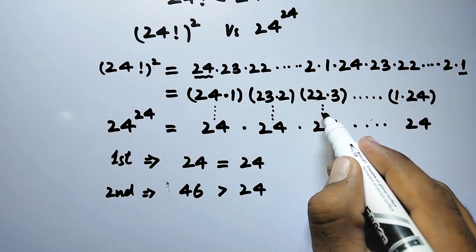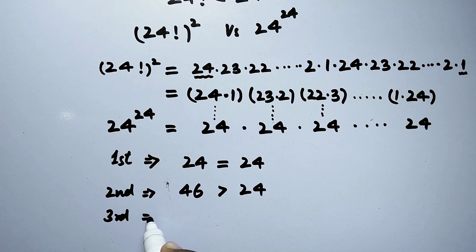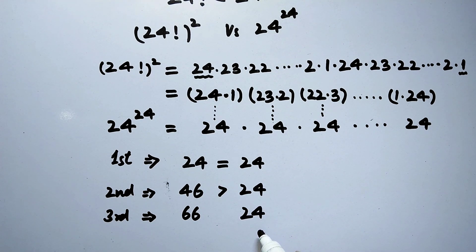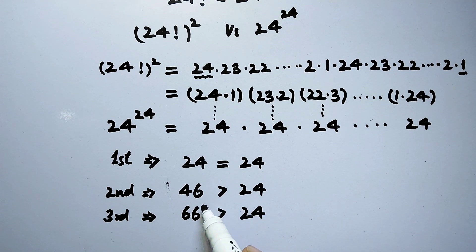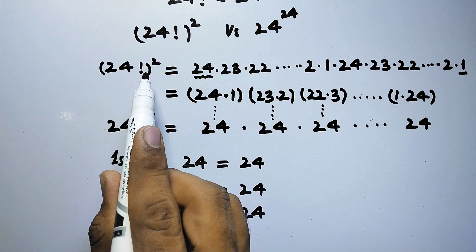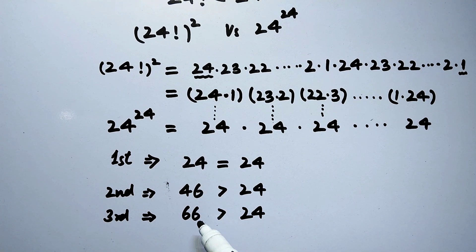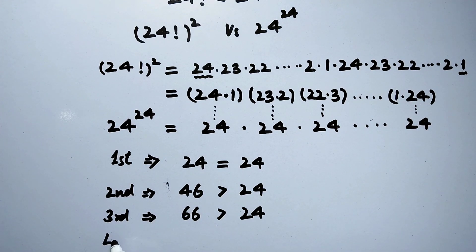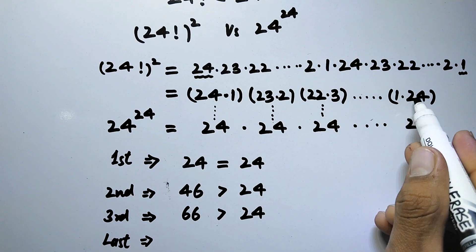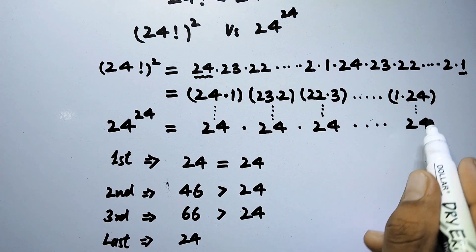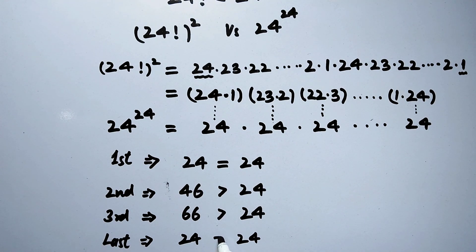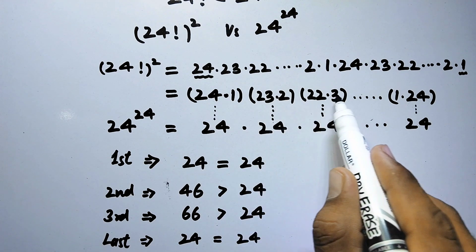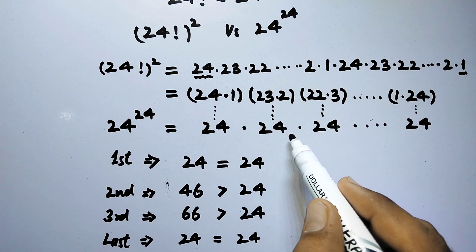For group 3: 22 times 3 equals 66, compared to 24 — again greater. We can see that the series from 24 factorial squared is getting larger and larger at each step. Even the last group, 1 times 24, equals 24, which equals 24 in the second series. So this series results in values greater than or equal to 24 at every step.